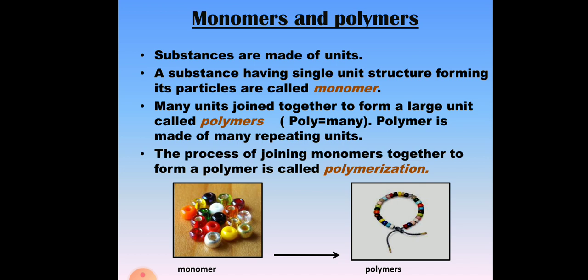Poly means many. A polymer is made of many repeating units. If you look at the picture you can understand what a monomer and a polymer are.